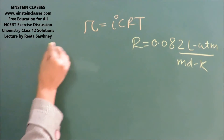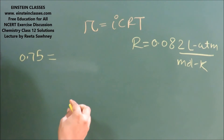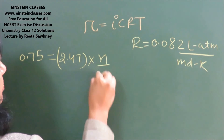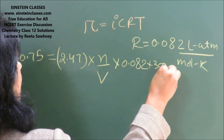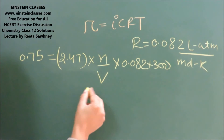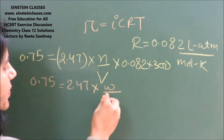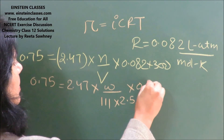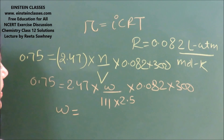Placing the values: osmotic pressure is 0.75, van't Hoff factor i is 2.47, C is the molarity which is moles divided by volume, R is 0.082, and T is 300 Kelvin. Volume is 2.5 liters. We can write moles as given mass divided by molar mass, and the molar mass of calcium chloride is 111. By simplifying, we find the amount of calcium chloride is 3.42 grams.